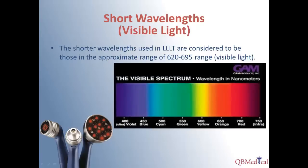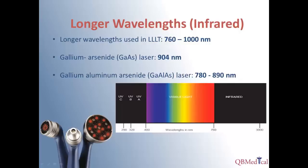The wavelengths in the lower end of the therapeutic spectrum are in the higher end of the visible spectrum, giving us red light. As we get into the longer wavelengths used in therapy, we approach the near-infrared to infrared end of the spectrum, meaning these lasers are invisible. The gallium arsenide laser gives a wavelength of 904 nanometers, and gallium aluminum arsenide gives anywhere from 780 to 890 nanometers — two of the more common active mediums found in therapeutic lasers.